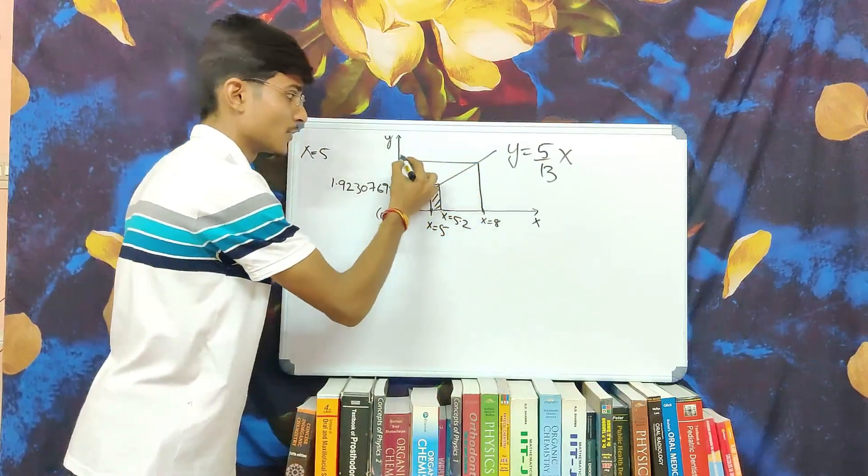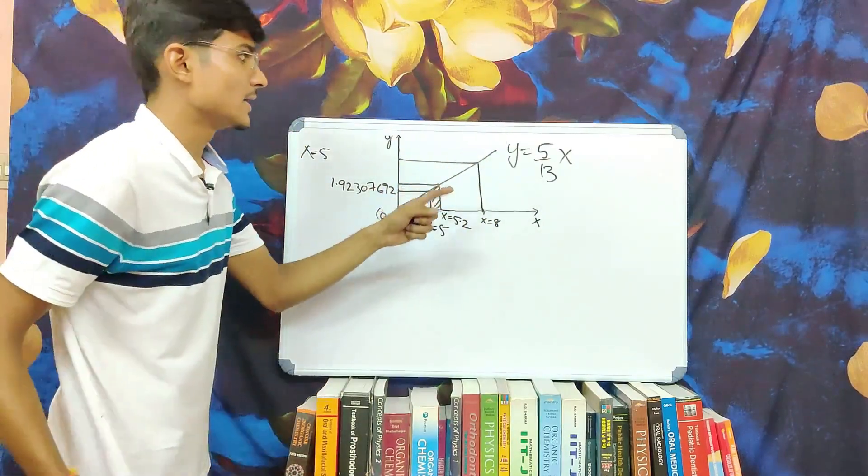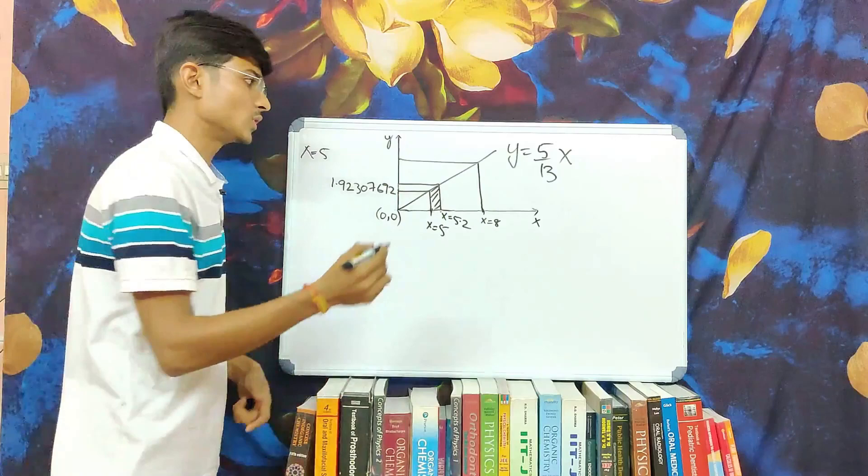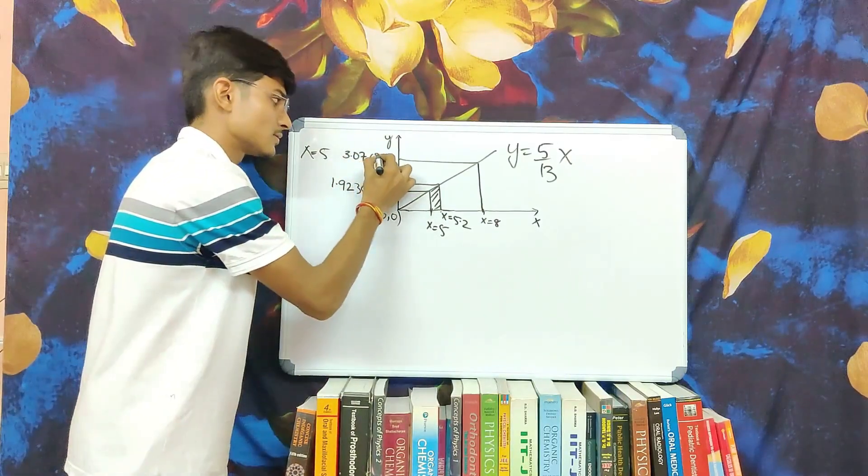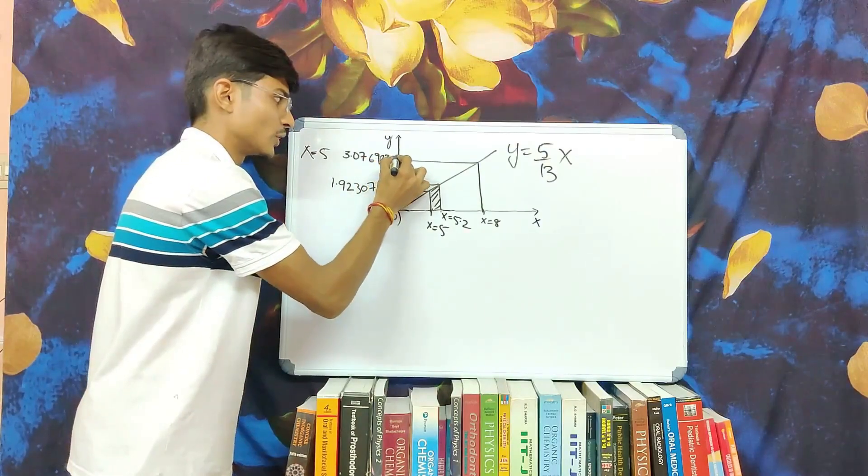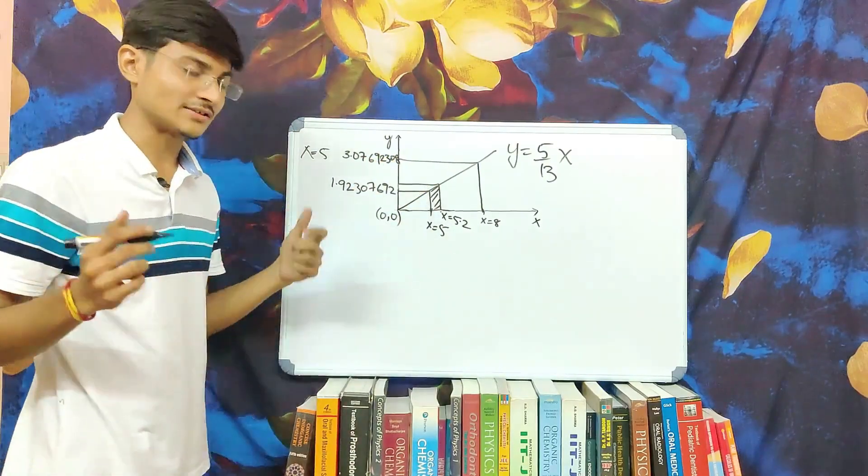But what we get on substitution is 8 times 5 by 13 which is equal to 3.07692308. I know it's a large number.